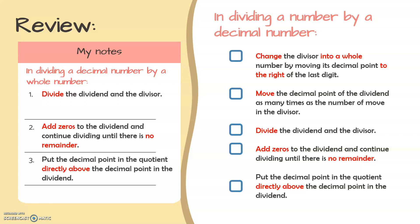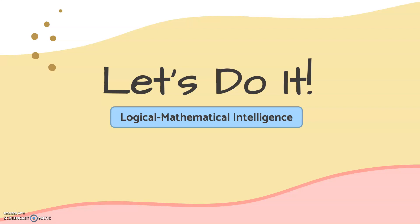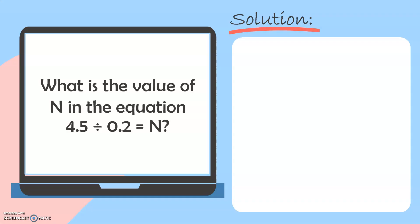Now, let's try to follow these steps in our following examples. First, what is the value of n in the equation 4.5 divided by 0.2 equals n?